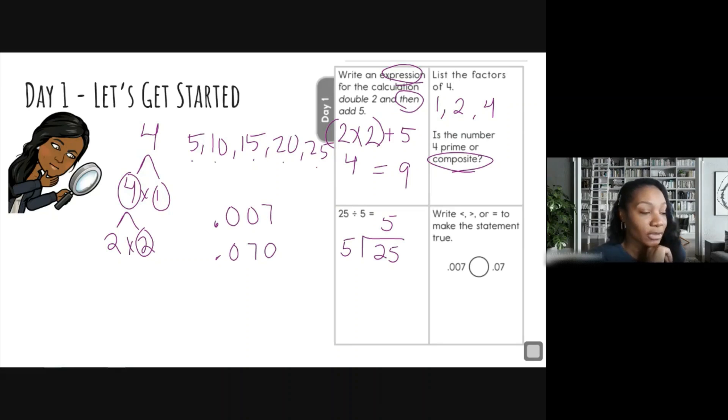So since we line the decimals up, we can just look and see what numbers are larger than the other ones. So we have zero and zero, those are the same, I'm not going to worry about those. Let's move over to the hundredth place: zero and seven. Hmm, which one is larger? The seven, of course. So that makes this number bigger. So seven hundredths is greater than seven thousandths, and make sure we have that alligator eating the bigger number.